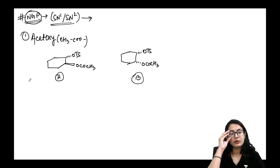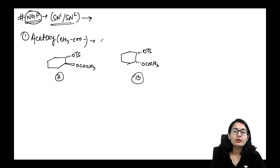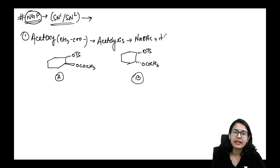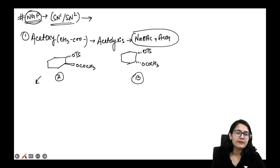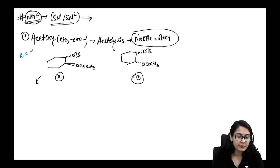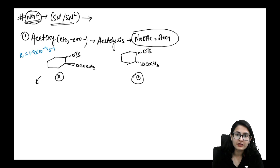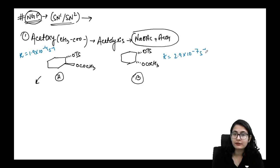We are considering acetolysis — sodium acetate plus acetic acid combination — to determine reactivity. The rate constant for molecule A (trans) is 1.9 × 10⁻⁴ s⁻¹, and the rate constant for molecule B (cis) is 2.9 × 10⁻⁷ s⁻¹.